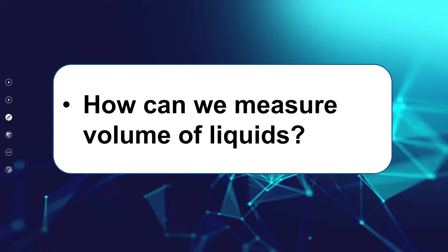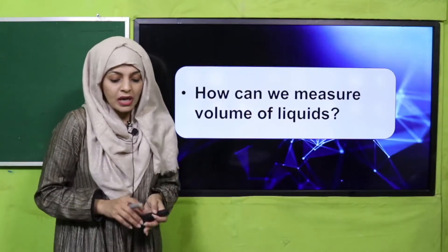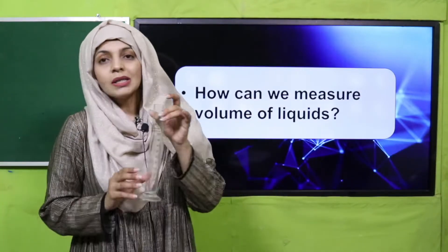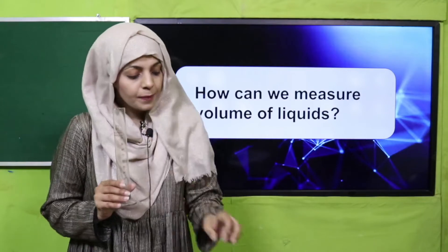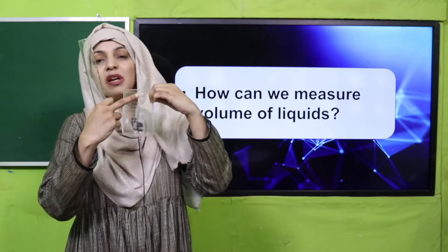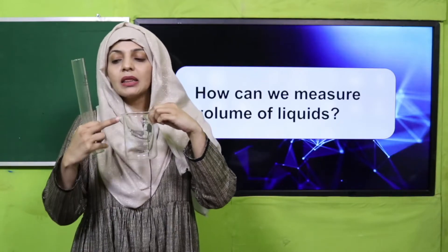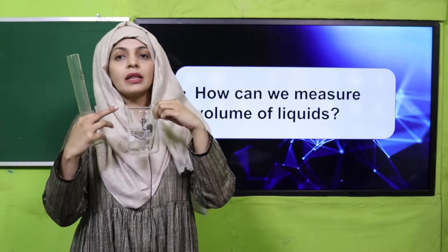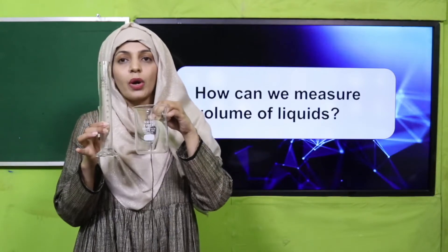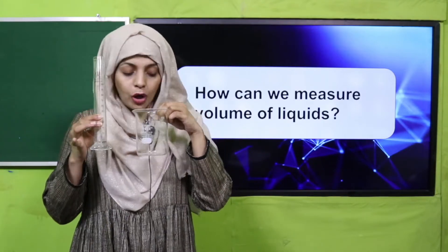Pre-reading question: How can we measure the volume of liquids? We can measure the volume of liquids through cylinders, burets, and beakers, because there are measurements marked on them showing how much water, how many ounces or milliliters you need. Through them, we measure the volume of liquids.